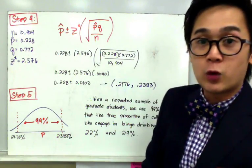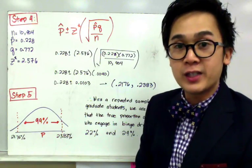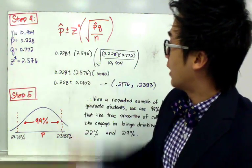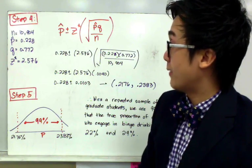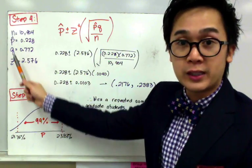For step number four, we're ready to compute for the confidence interval using our formula, which is P hat plus or minus Z star square root of PQ over N. Here are the values that we will need for our formula.